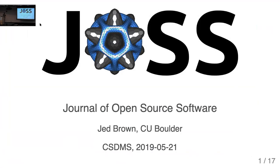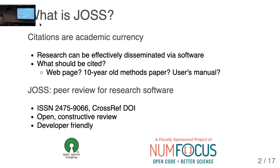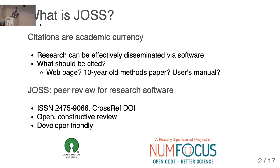I'm going to talk about JOSS, which is the Journal for Open-Source Software. I've been an associate editor there for around a year. Why does this journal exist? This is a really different journal from others because we actually review the software — it's not just a review of a paper. In fact, the papers are relatively small. One of the prime motivations is that citations are seen as academic currency, and a lot of research can be effectively disseminated via software.